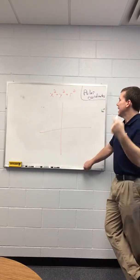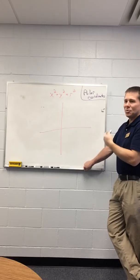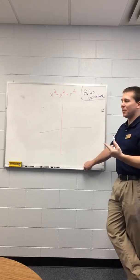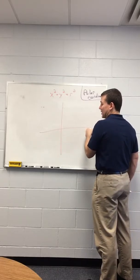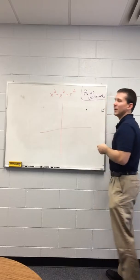And essentially, the idea is, in the regular x-y system, x is horizontal, y is vertical. In order to plot a point, I tell you an x, a distance to go horizontally. I tell you a y, a distance to go vertically. And you end up at some point right there.